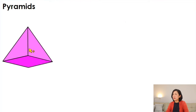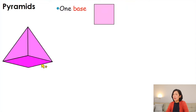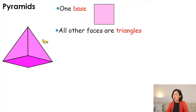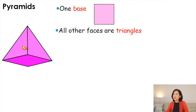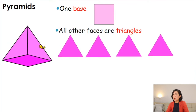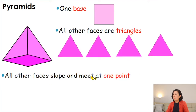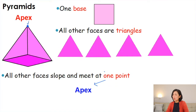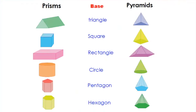Now let's move on to the pyramid. A pyramid has only one base. For example, this pyramid has a square as its base. All the other faces are triangles — you can spot the triangular faces surrounding the pyramid. These faces slope and meet at one point called the apex.